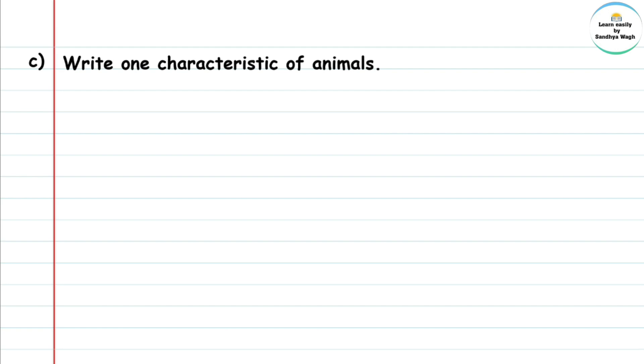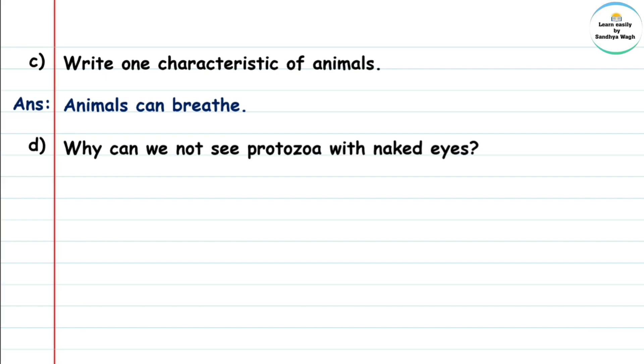Part c: Write one characteristic of animals. Answer: Animals can breathe. Part d: Why can we not see protozoa with naked eyes? Without using a microscope, why can we not see protozoa?